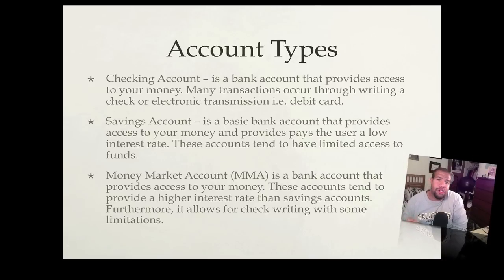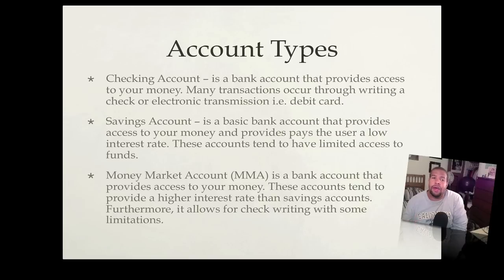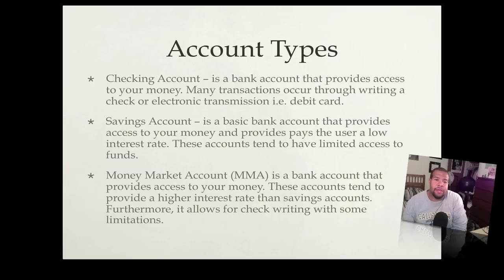The first account type is a checking account — an account where you have access to your money and you typically write checks or have a lot of electronic transactions through your debit card. A savings account is similar in that you have access to your money, but the difference is you typically have limited access. The benefit is you get interest — the bank pays you to hold your money.